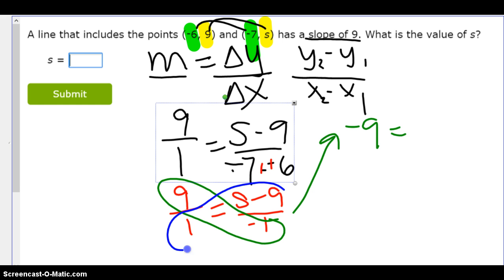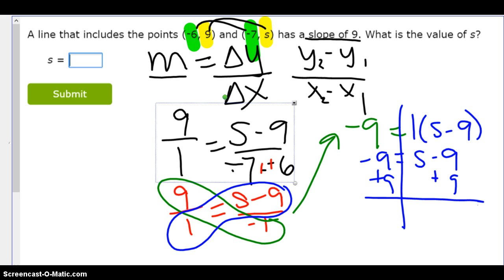And then I can do 1 times S minus 9. So 1 times S minus 9. Did I really even need to write that 1 in there? No. Really, that just gives me negative 9 equals S minus 9. Well, now that should be pretty quick to solve. If negative 9 equals S minus 9, what is S? Well, I add my 9, add my 9. And I get 0 equals S.